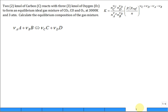Two kilomoles of carbon react with three kilomoles of oxygen to form an equilibrium ideal gas mixture of CO2, CO, and O2 at 3000 Kelvin and a pressure of 3 atm. Calculate the equilibrium composition of the gas mixture. So let me walk you through this a little bit.